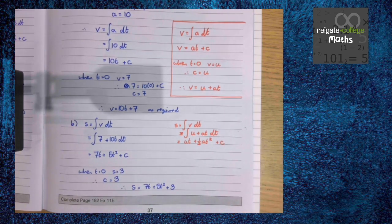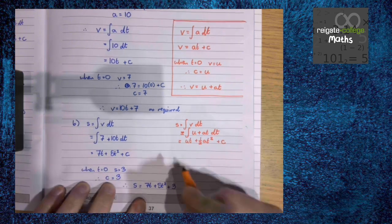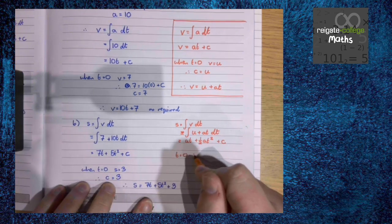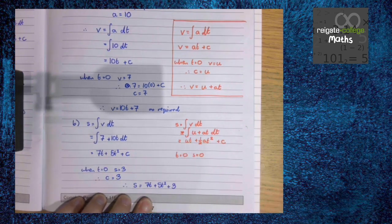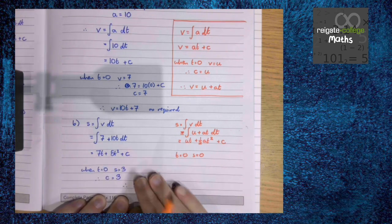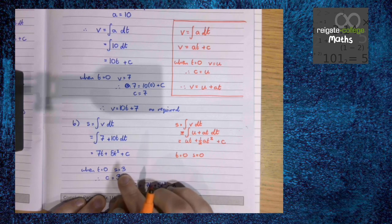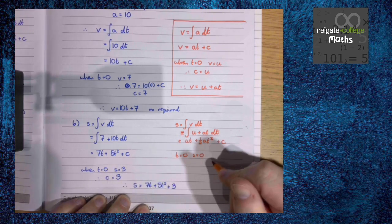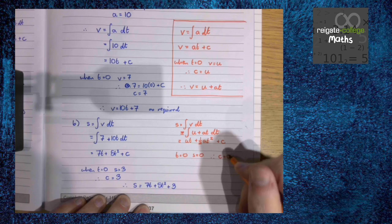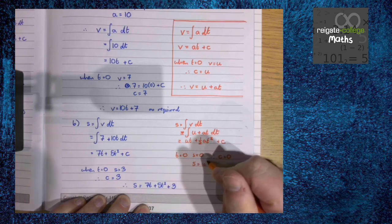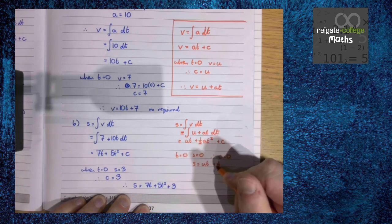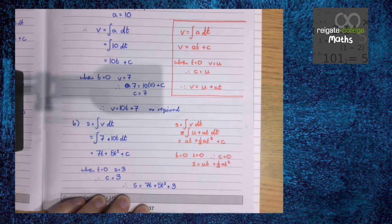Now for the standard SUVAT equation, our initial displacement is 0 because the SUVAT equations are always with respect to a starting origin. Whereas here, we had an initial displacement of 3. But again, if we wanted to use calculus to derive some of the SUVAT equations, we could do so.